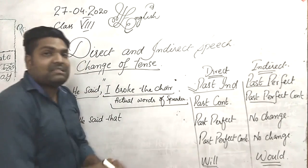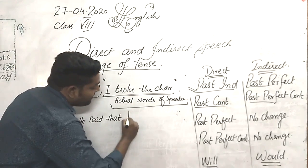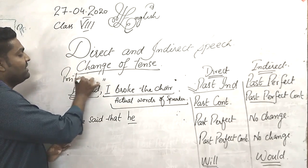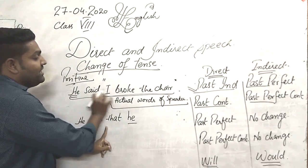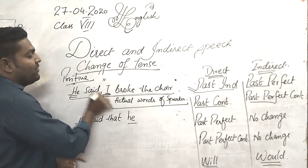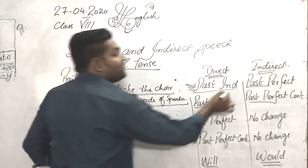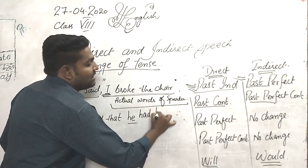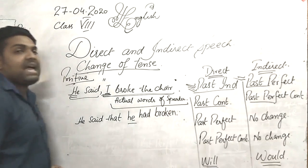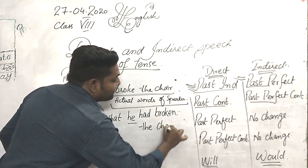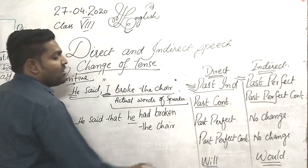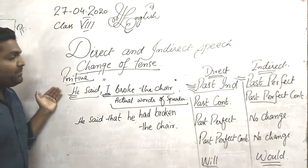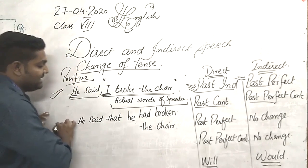He said 'I broke the glass' will now be changed into: 'He said that he...' We have changed only the pronoun here. Since the direct speech is in past indefinite, we change it to past perfect. So the sentence becomes: 'He said that he had broken the glass.' The form of the verb is changed, the inverted commas are removed, and there must be only a full stop at the end. This is the formation of the indirect sentence — we have changed direct speech into indirect.